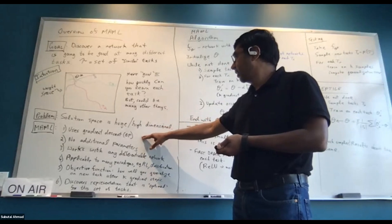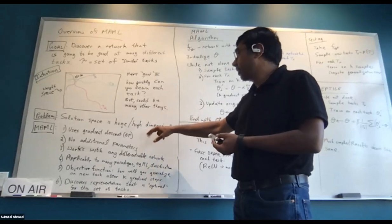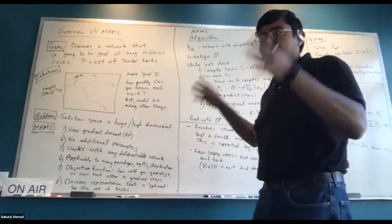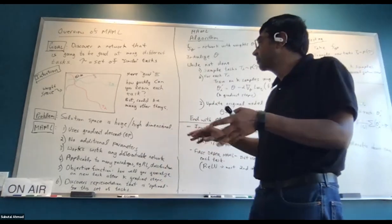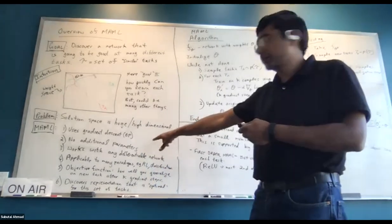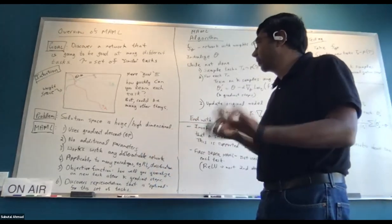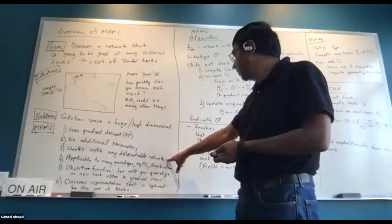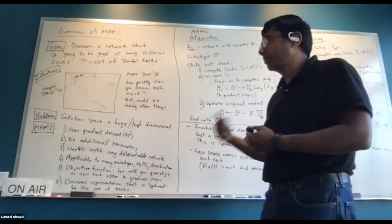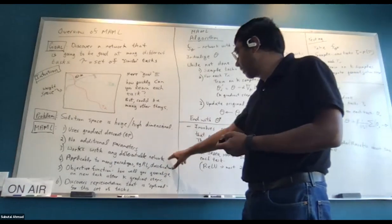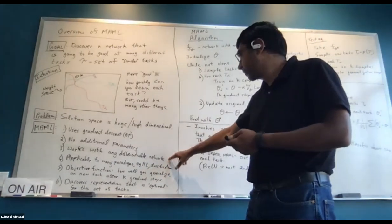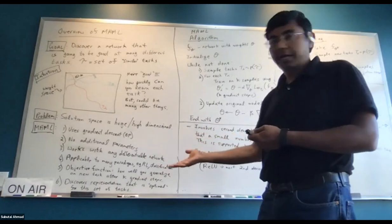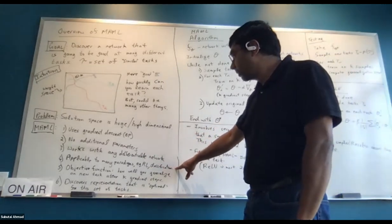MAML uses gradient descent and backprop to solve this problem. Another interesting thing is that there are no additional parameters introduced by this method — it just uses the same parameters as your network. There are a couple of hyperparameters, but basically no new weights are introduced. It can work with any differentiable network, and is applicable to many paradigms: reinforcement learning, classification, regression, and so on.